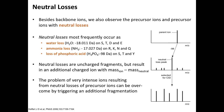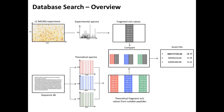For most applications today, especially when you have 100 million spectra, manual annotation is not the method of choice. Instead, we do database search. The underlying principle is easy to understand. We have an experimental spectrum, and the information contained in it is really just a list of M/Z values — a list of peaks. Note that I did not include intensities; it's just M/Z, which masses do you see.